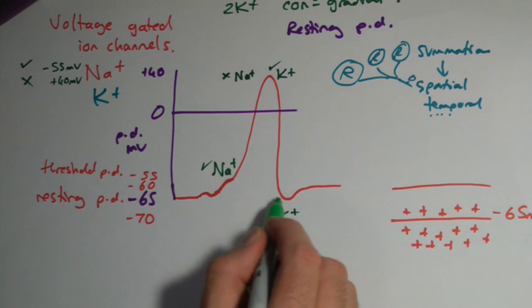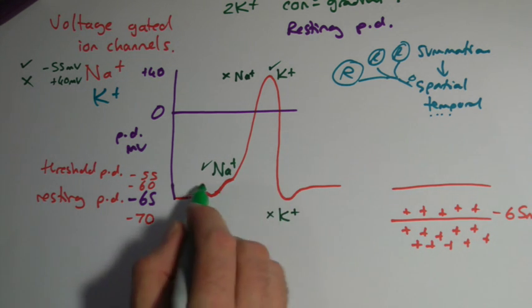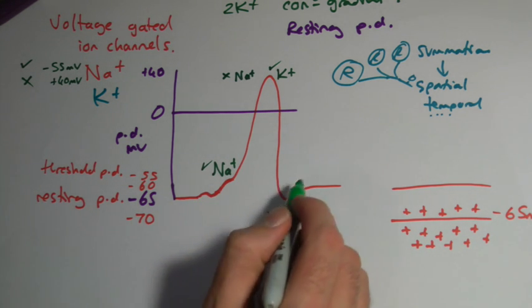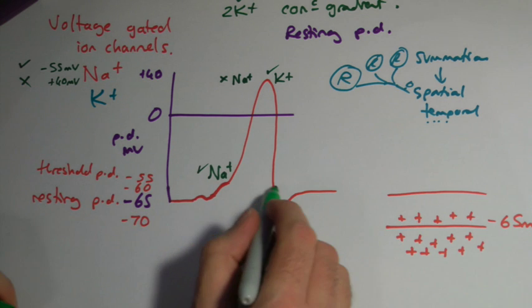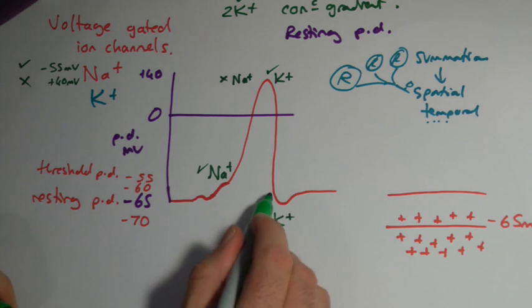They actually tend to overshoot a little bit. So they go maybe down to, I don't know, minus seventy. It's not very clear on there, but they do. They go below that resting potential before it comes back.